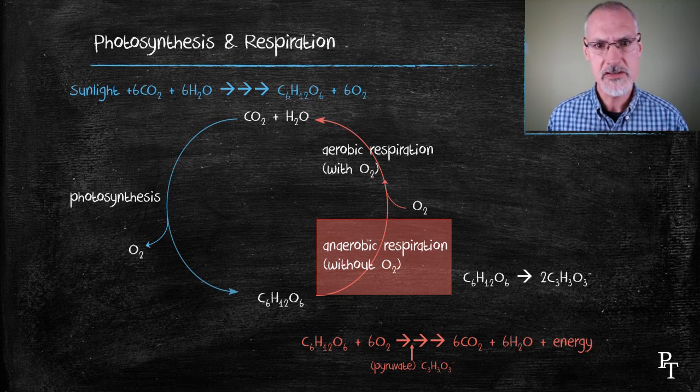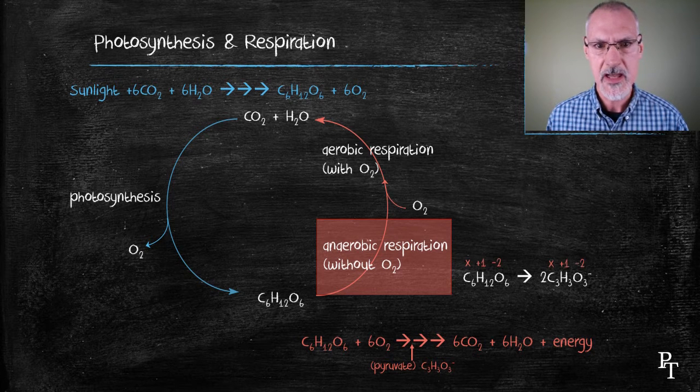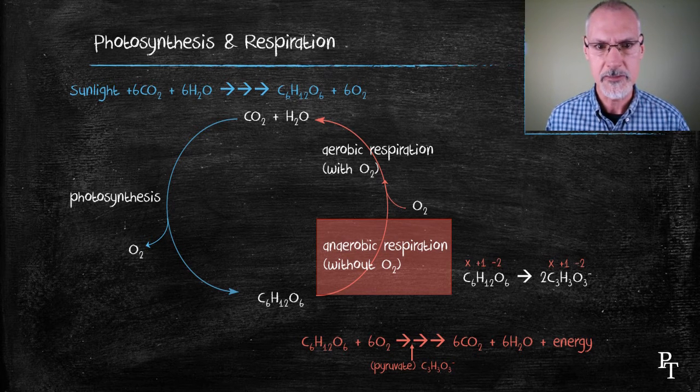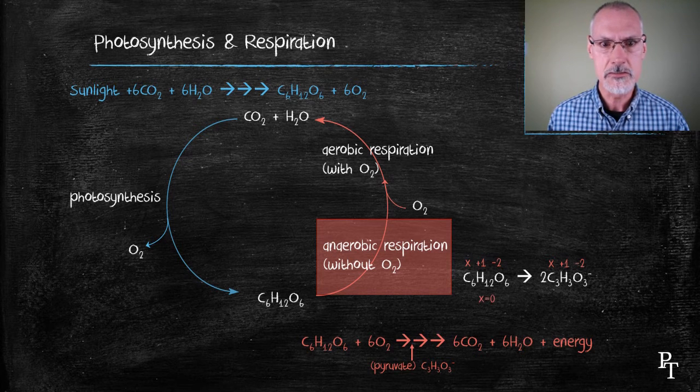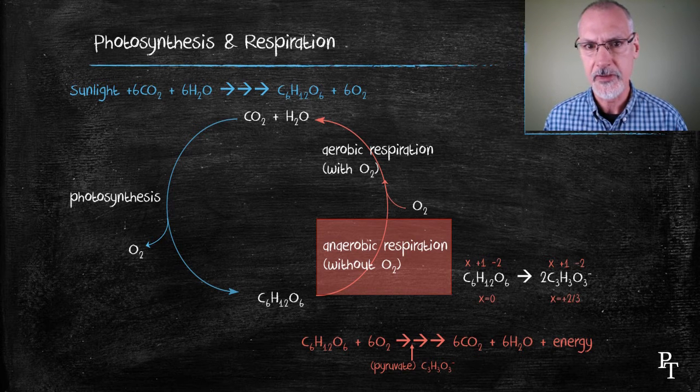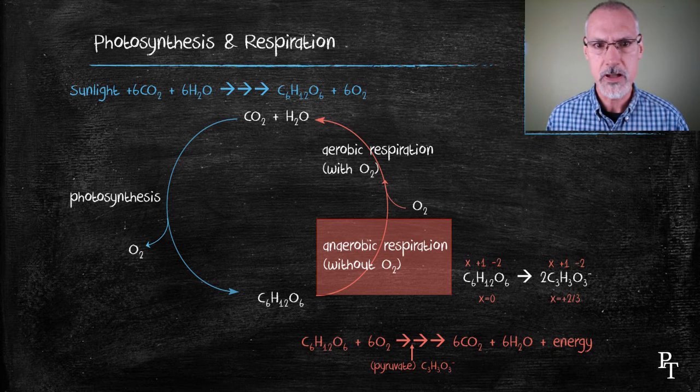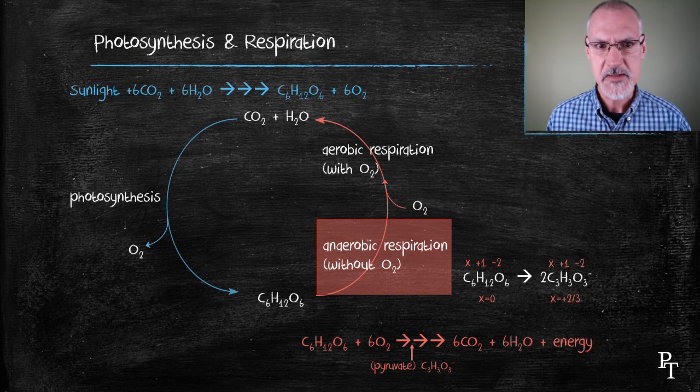I'm going to look at the changes in carbon's oxidation states here. I'll let carbon's oxidation state be x and then solve using some of the techniques we saw in chapter 9. I can see that initially in the glucose, the carbon has zero oxidation state and plus two-thirds in the second compound, an increase of plus two-thirds.